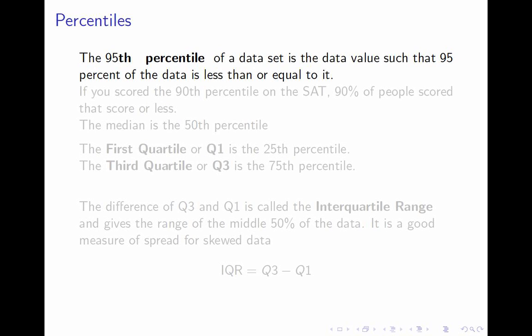We'll begin with the notion of percentile. You are familiar with percentile. At the very least, when you opened up your SATs, you got to see what your percentile was. But let's say this a bit more precisely. The 95th percentile of a data set is the data value such that 95% of the data is less than or equal to it, and therefore 5% is greater than it.